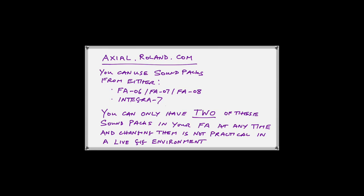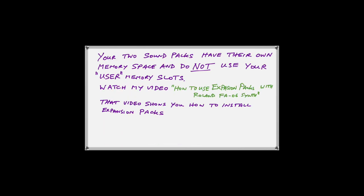Here is a quick review: you can go to axial.roland.com and use expansion packs for either the FA-06, FA-07, or FA-08, or you can use Integra-7 song packs. You can only have two of them in your FA at any time and changing them is not practical in a live gig environment. Your two song packs have their own memory space and do not use up your user memory slots.